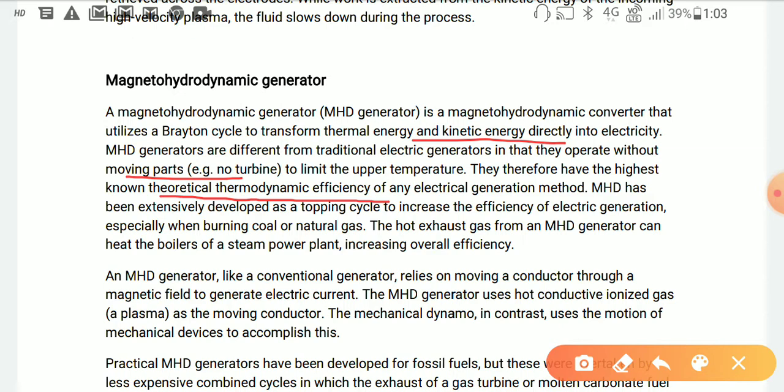MHD has been extensively developed as a topping cycle to increase the efficiency of electric generation, especially when burning coal or natural gas. The hot exhaust gas from an MHD generator can heat the boiler of a steam power plant and increase the overall efficiency.